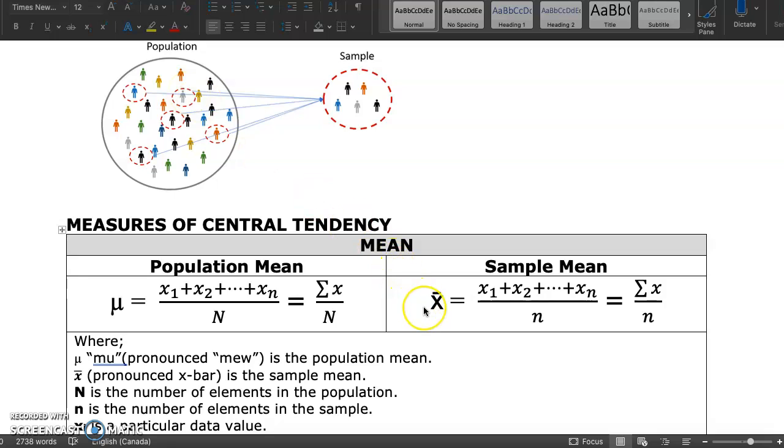We use a different symbol when calculating the mean of a sample versus the mean of a population. Notice that the lowercase n indicates the number of elements in the sample, and the capital N represents the number of elements in the population. Mu is the Greek letter denoted to represent the population mean. X bar is used to represent the sample mean. We need to distinguish between these two because oftentimes we use a sample mean to approximate the population mean.